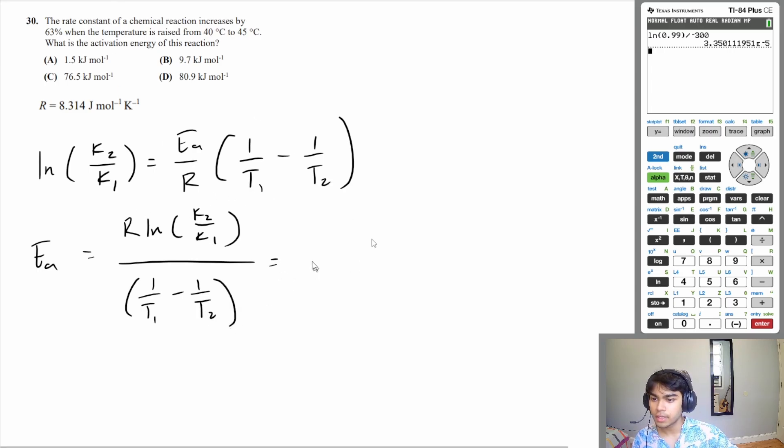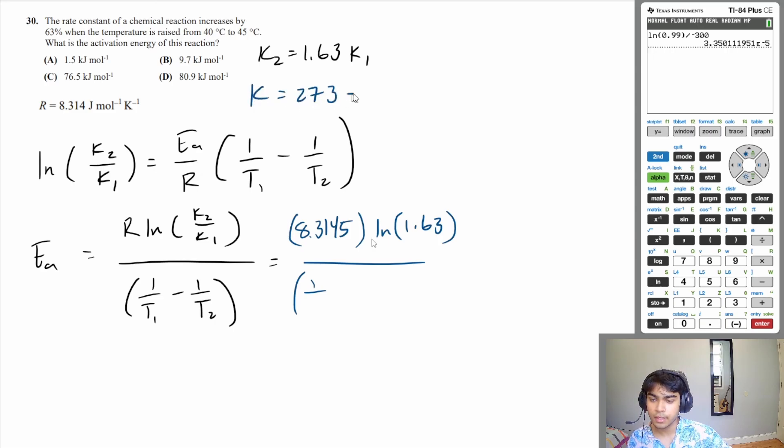So that's going to be R times the natural log of K2 over K1 over 1 over temperature 1 minus 1 over temperature 2. The R value that you want to use here is going to be 8.3145. And just for space, I won't write the units times the natural log of K2 over K1. Now, what is this value? Well, you're told that the rate constant increases by 63%. So K2 is going to be 1.63 times K1. So K2 over K1 should equal 1.63. All right, and then your temperature values, 1 over T1, that's your initial temperature, that's 40 degrees Celsius. But you want that in absolute temperature, which is Kelvin. Kelvin is 273 plus the Celsius value. So that's going to be 313 and then minus 1 over temperature 2, which is 45 degrees Celsius. So 1 over 318.